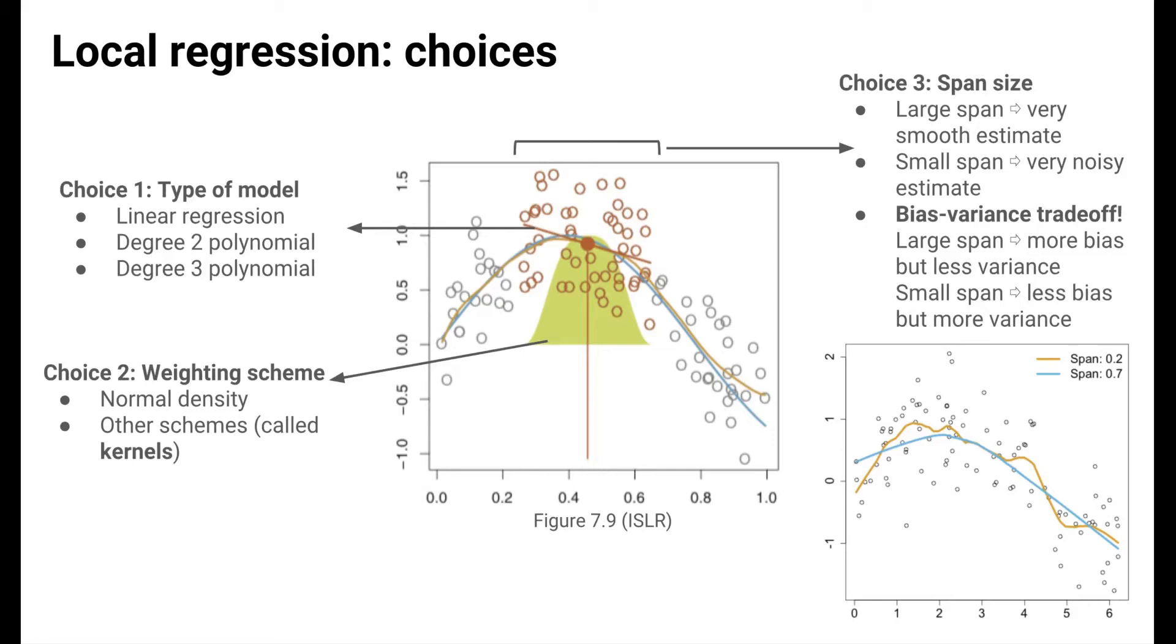As you can imagine, there's a bias variance trade-off with the span size. A large span results in an estimate that has more bias but less variance because the estimate is smoother. A small span results in an estimate that has less bias because it's more complex, but this results in higher variance because the estimate jumps around much more.